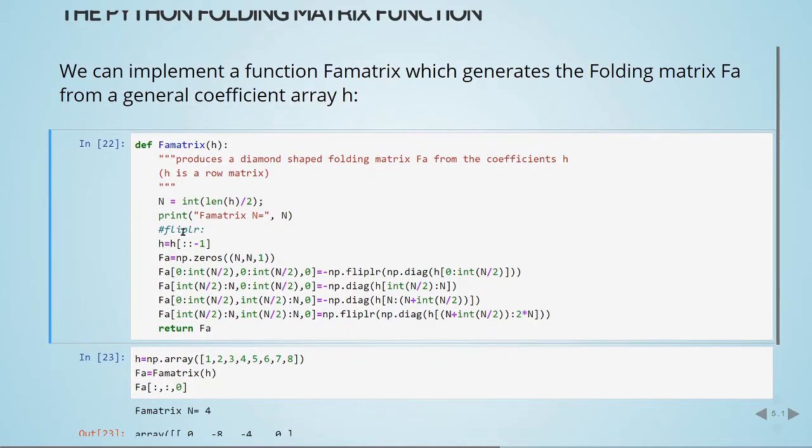Here we define this F-A matrix function that will produce a diamond-shaped folding matrix F-A from the coefficients H, where H is a row matrix.